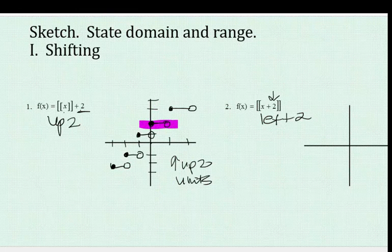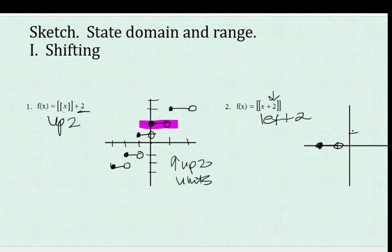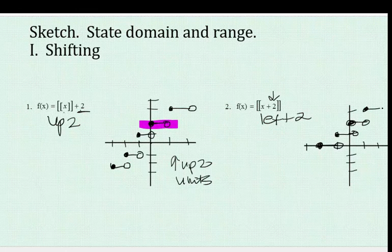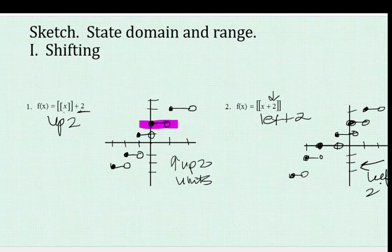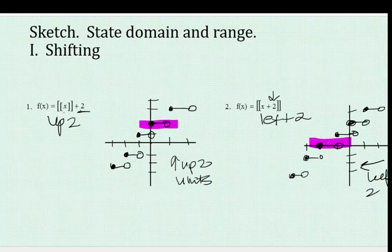Now what about number two? We've got to take that same pivot point, and instead of moving it up two, we're going to move it to the left two. Now look at number 2 — the plus 2 is inside the brackets. If it's happening to the x, it's going to be opposite of logic. So it says plus 2, which means I'm going to move everything to the left two units. So I go over two — closed circle to open circle — there's that pivot point. Now I keep the step pattern shifting from there. So what did we do? We moved it left two. We started with that pivot point and just moved it to the left two.